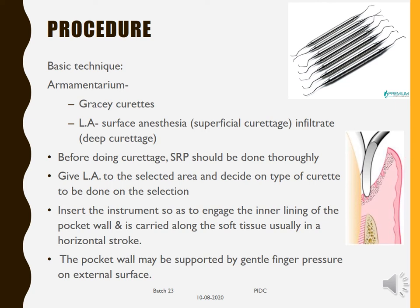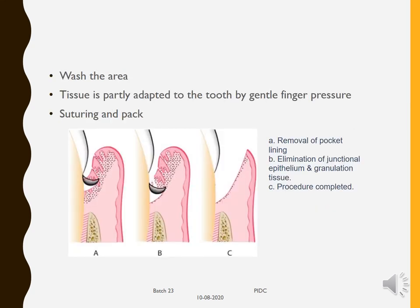The pocket wall may be supported outside by gentle finger pressure on the external surface, so that while removing the inner wall of the pocket the external tissue doesn't slip away. After curettage, the area is washed with saline, tissue is partly adapted to the tooth by means of finger pressure, suturing, and a pack if needed. Here you can see the diagrammatic representation: removal of the pocket lining, elimination of the junctional epithelium, and the completed procedure.